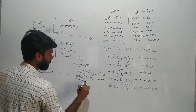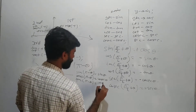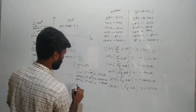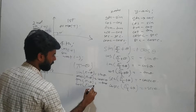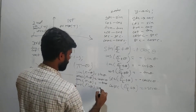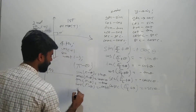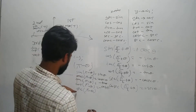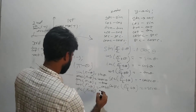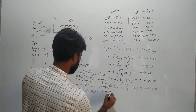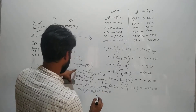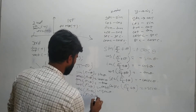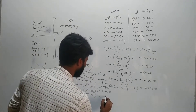Tan(π − θ) = −tan θ. Cot(π − θ) = −cot θ. Sec(π − θ): sec will remain sec, so sec(π − θ) = −sec θ. Cos(π − θ): cos will remain cos, but it is negative in the second quadrant, so cos(π − θ) = −cos θ.